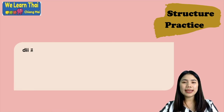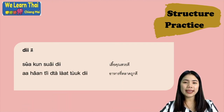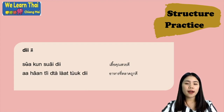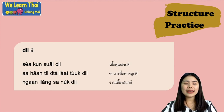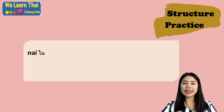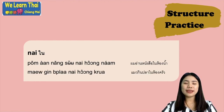The next word is ดี, meaning good. For example: เสื้อคุณสวยดี means your shirt is beautiful. อาหารที่ตลาดถูกดี means the food at the market is cheap — ถูกดี meaning good price. งานเล่นสนุกดี means the party was fun. Next, the word ใน means in. For example: ผมอ่านหนังสือในห้องนอน means I'm reading a book in the bedroom. And แมวกินปลาในห้องครัว means the cat eats a fish in the kitchen.